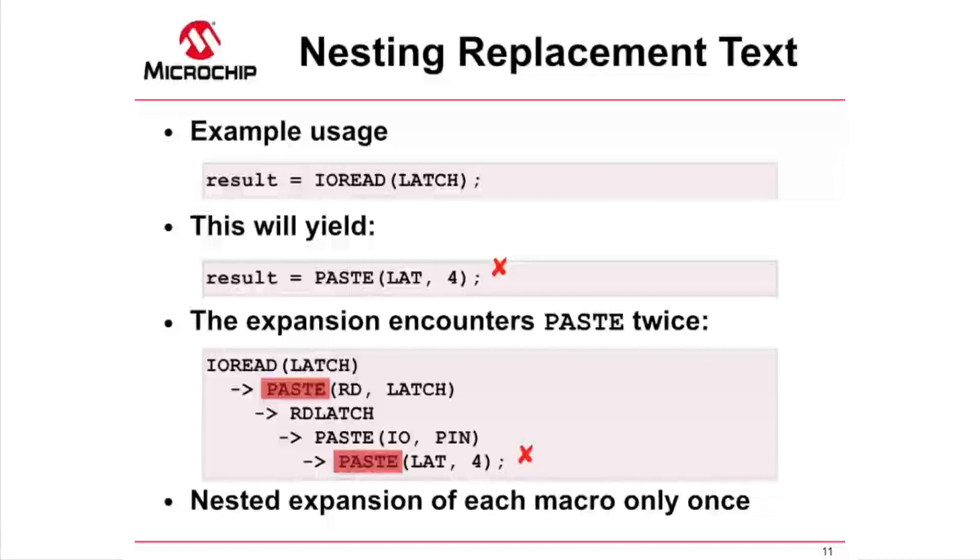We could work around this issue by creating an identical version of PASTE, but which has a different name. We could use PASTE in the IOREAD definition, and the NEWPASTE macro in the RDPORT and RDLATCH definitions.